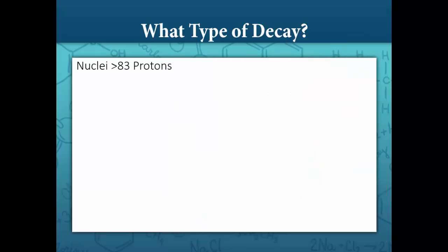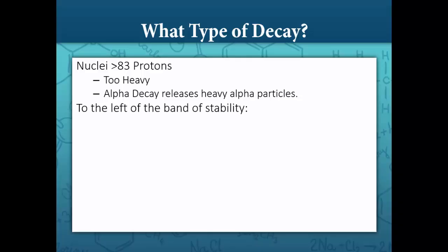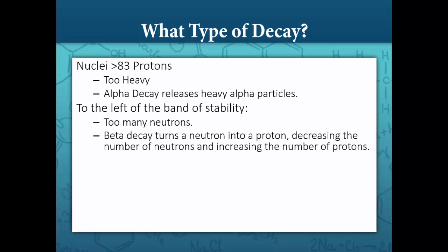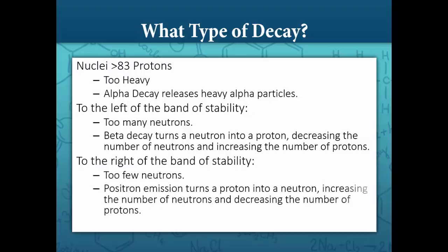In summary, this is how to determine the most probable type of decay a radioactive isotope will undergo. If the nucleus contains more than 83 protons, it is too heavy to be held together by the strong nuclear force and will most likely undergo alpha decay, because emitting heavy alpha particles is the quickest way to reduce mass. If the neutron-to-proton ratio falls to the left of the band of stability, meaning too many neutrons or too few protons, the nucleus will most likely undergo beta decay, turning a neutron into a proton. If the nucleus falls to the right of the band of stability, meaning too few neutrons or too many protons, it will most likely undergo positron emission, in which a proton is turned into a neutron.